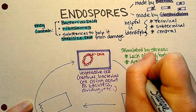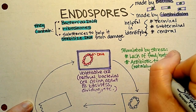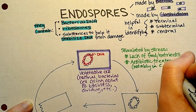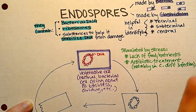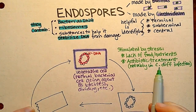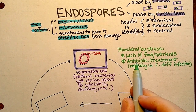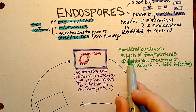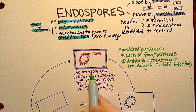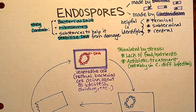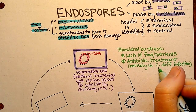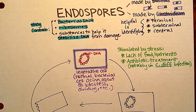Another stress trigger would be antibiotic treatment. This is notable in the treatment of C. diff, because if someone has a Clostridium difficile infection — which is an endospore former — the antibiotics stress out the vegetative cells and they form endospores. The problem is that endospores are impervious to antibiotics, so there can be a re-emergence of the infection, which does happen quite frequently.